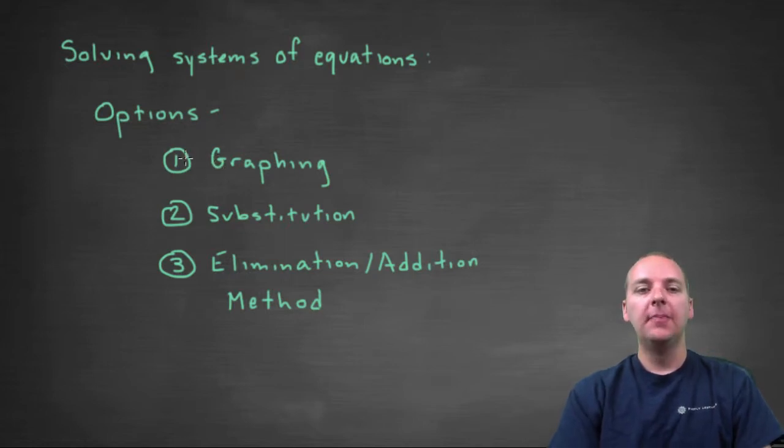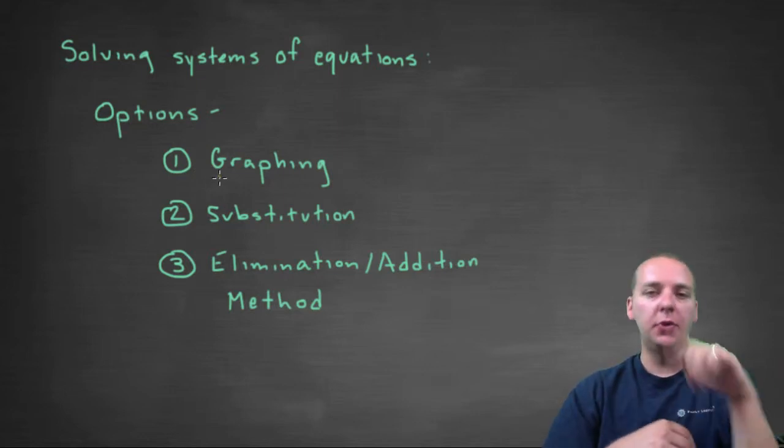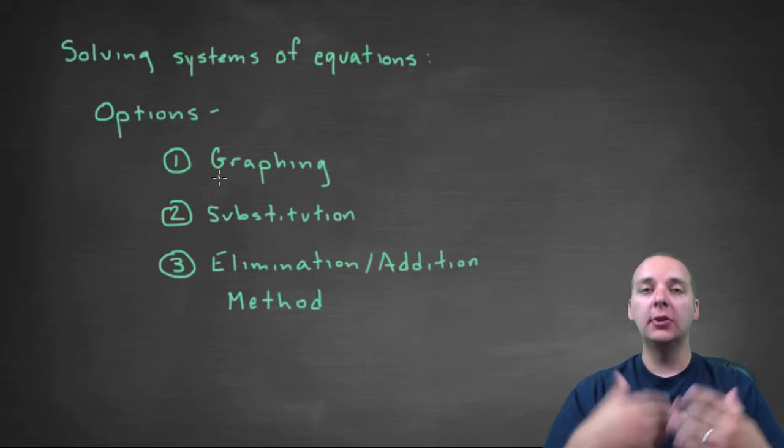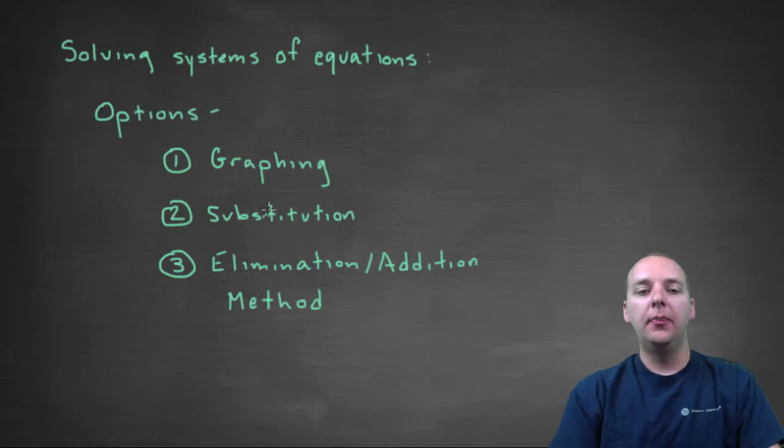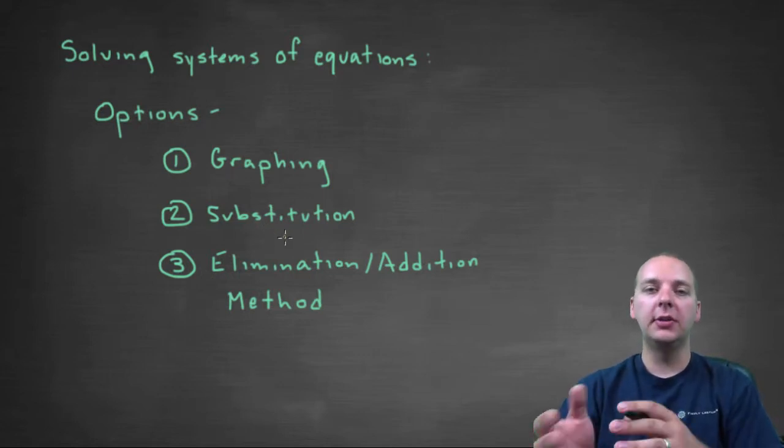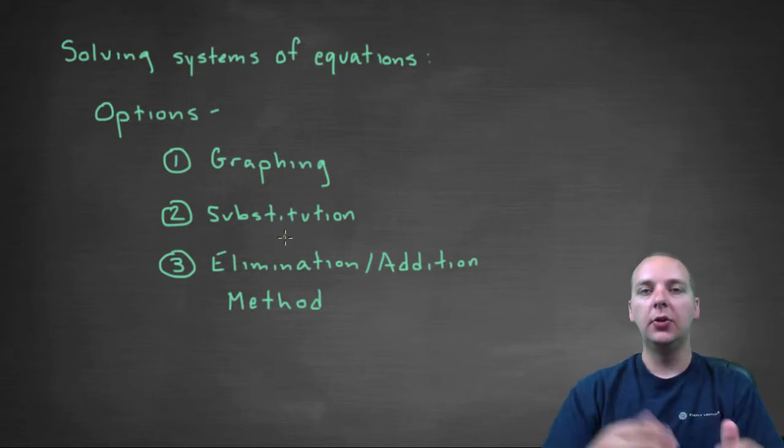So just to recap our three different options, you can either use a graphing method where you graph all the equations in your system, and then the solutions would be where those graphs intersect each other. You could use a substitution method where you solve for one of the variables and then substitute that expression into the other equation.